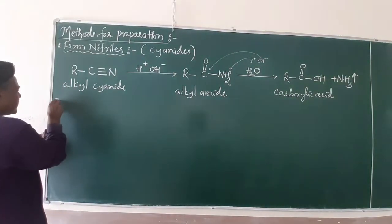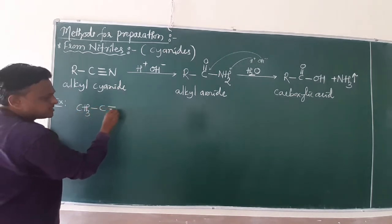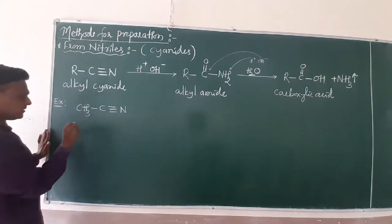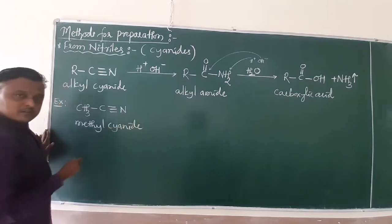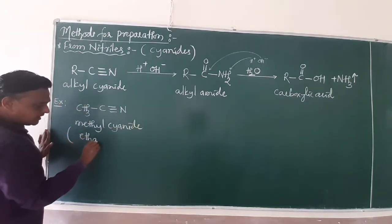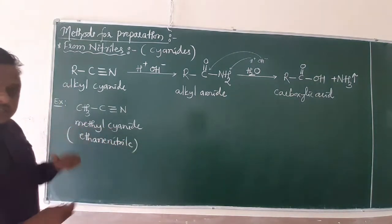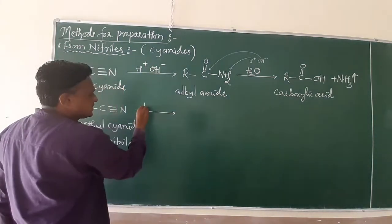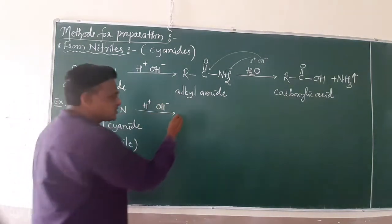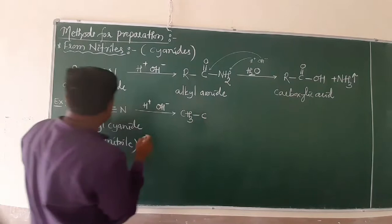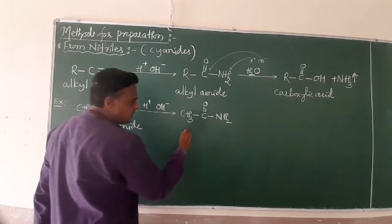Let us consider an example for this reaction. We have CH₃-C triple bond N. The name of this compound is methane cyanide. In nitrile nomenclature, this is ethane nitrile — two carbon atoms. When ethane nitrile undergoes the same acid hydrolysis, the product formed is CH₃-C double bond O-NH₂. The name of this compound is acetamide.